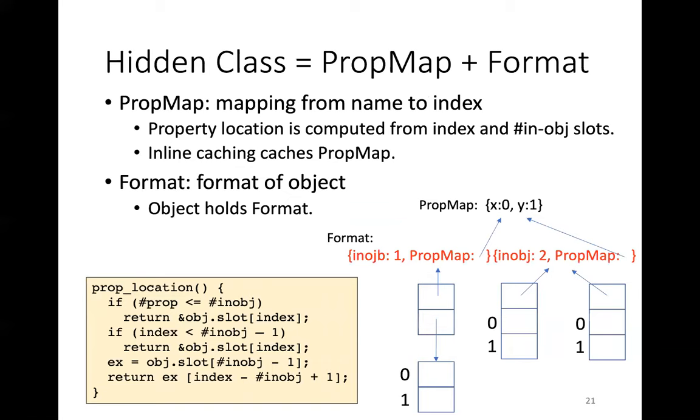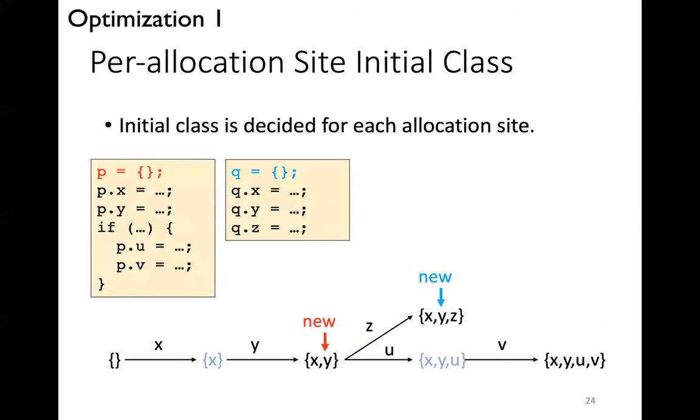To solve this problem, we split a hidden class into two parts, property maps and format. This is property map and these are formats. Property map describes the mapping from name to index, but the index is not the offset. The actual location is computed in this function from the index and the number of in-object slots, which is held in the format. In-line caching caches this property map. The initial class is decided for each allocation site. For example, initial class for this red allocation site is this XY class. And the initial class for this blue allocation site is this XYZ.